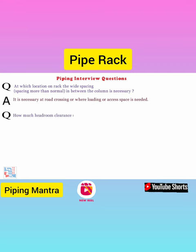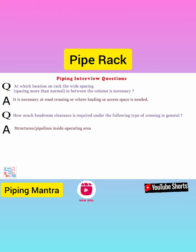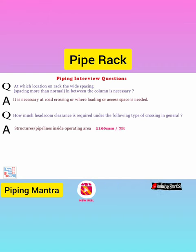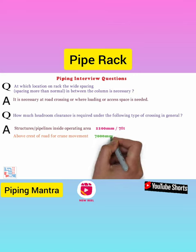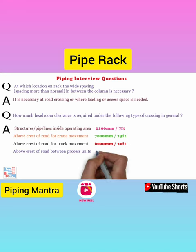How much headroom clearance is required under the following types of crossings? The headroom normally provided is: structural or pipeline inside an operating area requires 7 feet (2200 mm); above crest of road for crane movement requires around 23 feet (7000 mm); above crest of road for truck movement needs 20 feet (6 meters); and above crest of road between process units requires 15 feet (4500 mm) of headroom clearance.